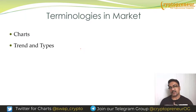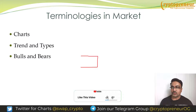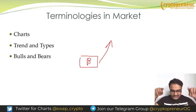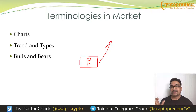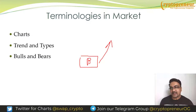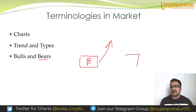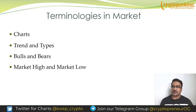Who are bulls? Bulls are those people who want to push the market upside — like a bull pushing everything upward with his horns. That is why people who want to push the market higher are called bulls. Who are bears? Bears push or scratch everything downward. That is why people who want to push the market downside are called bears. These are fundamental market terms you will hear throughout the course.